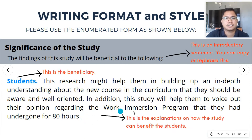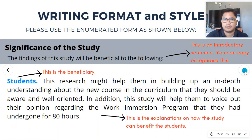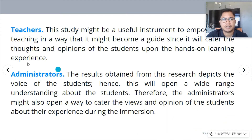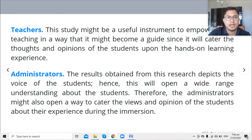You list the name of the beneficiary group followed by a period — that is the usual format. Make sure you include an explanation of how the study benefits each group. For example, 'Teachers. This study might be a useful instrument to empower their teaching in a way that it might become a guide, since it will cater to the thoughts and opinions of the students upon the hands-on learning experience.' That's how the study will benefit the teachers.